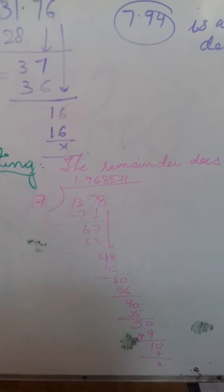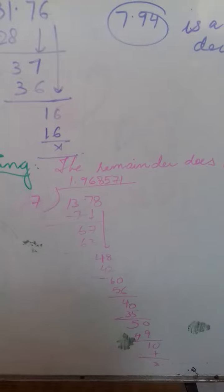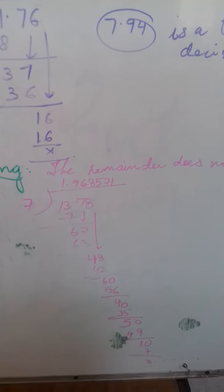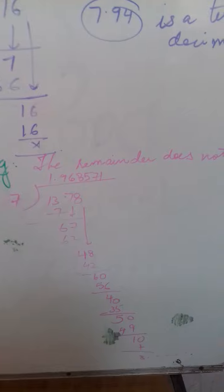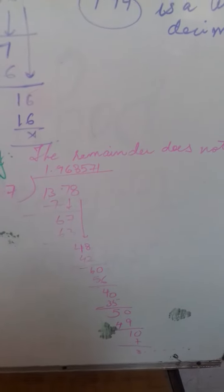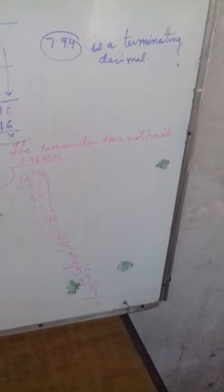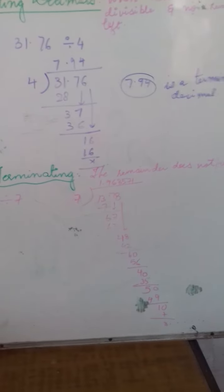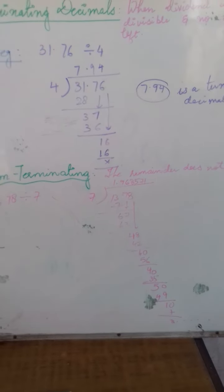7 8s are 56, then again 4 is left. Then 7 5s are 35, again 5 is left. Then 7 7s are 49, then 1 is left. And the division is going on.